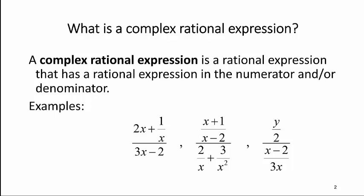In this section we're going to look at simplifying complex rational expressions. A complex rational expression is a rational expression that has a rational expression in the numerator and/or denominator. For example: (2x + 1/x) all divided by (3x − 2). You can see we have the 1/x in the numerator there as well, and that's what makes it complex.